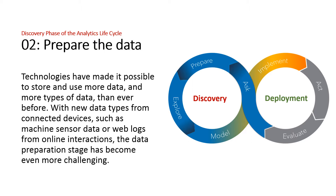Prepare the data. Technologies like Hadoop and faster, cheaper computers have made it possible to store and use more data and more types of data than ever before. But this has only amplified the need to join data in different formats from different sources and transform raw data so that it can be used as input for predictive modeling. With new data types from connected devices, such as machine sensor data or web logs from online interactions, the data preparation stage has become even more challenging. Many organizations still report that they spend an inordinate amount of time, sometimes up to 80%, dealing with data preparation tasks. The majority of time in the discovery phase should be spent on exploring data and creating good models instead of preparing data.